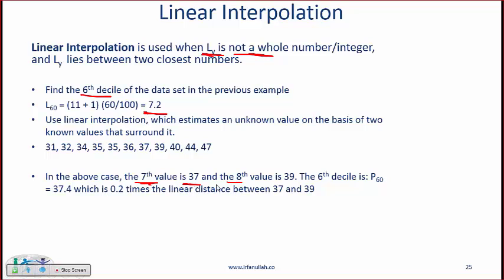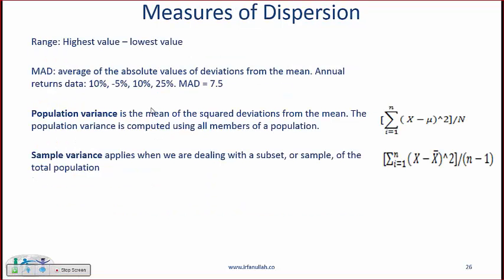Seventh value is 37, eighth value is 39, then the sixth decile which is what we are working with over here is 34.7, which is 0.2 times the linear distance between the two. And where is this 0.2 coming from? It's the 0.2 from here.